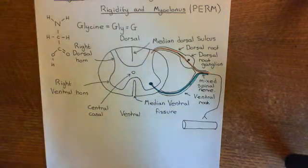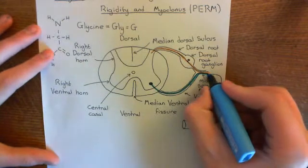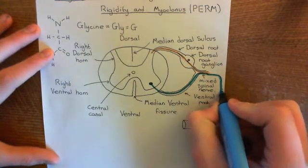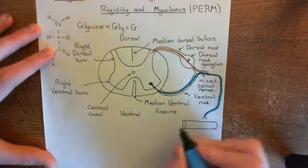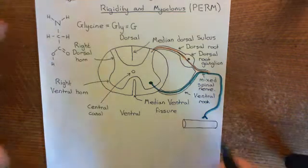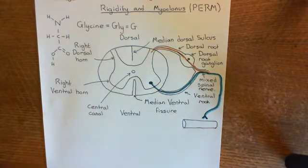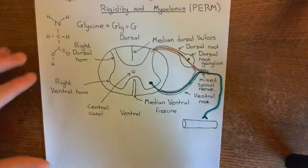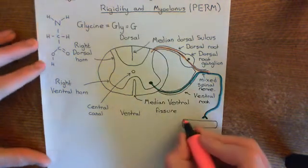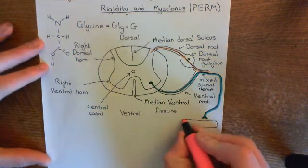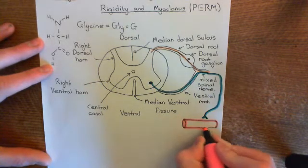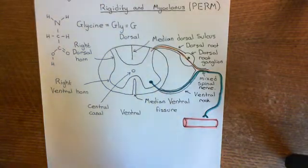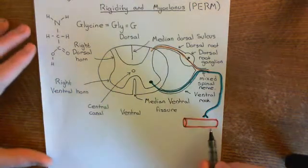Here comes the blue axon of this alpha-motor neuron. There in blue is the alpha-motor neuron, and it's synapsing onto our myofibre down here in red. So when the alpha-motor neuron fires an action potential, it will trigger some contraction in the skeletal myofibre down here.